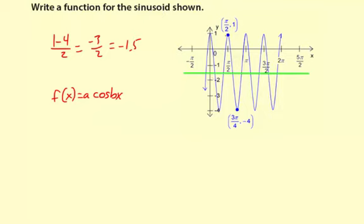Well, since we know the midline is at negative 1.5, the distance from 1 to negative 1.5 is 1 minus negative 1.5, which is 2.5. So we can write f of x equals 2.5, and then cosine.